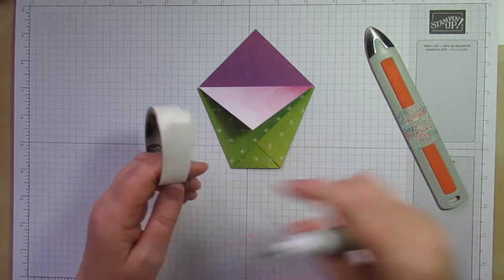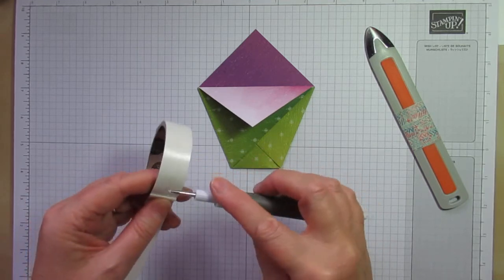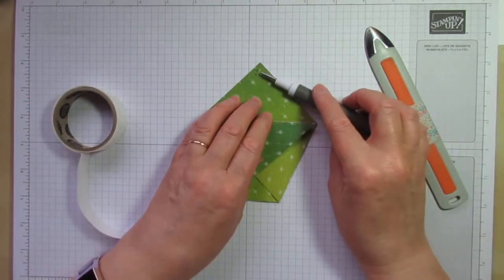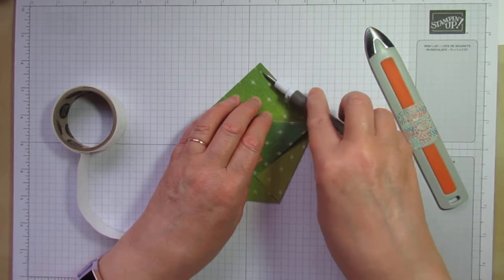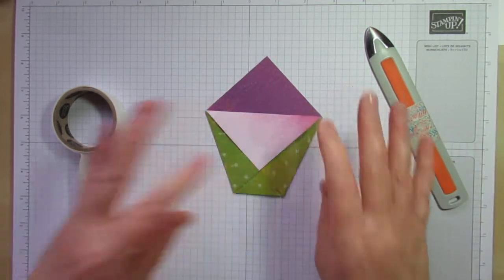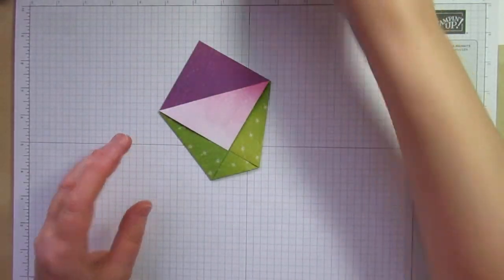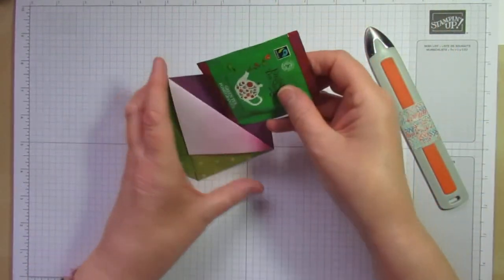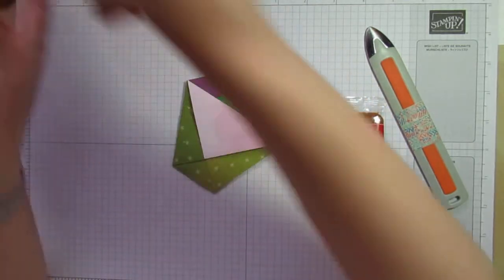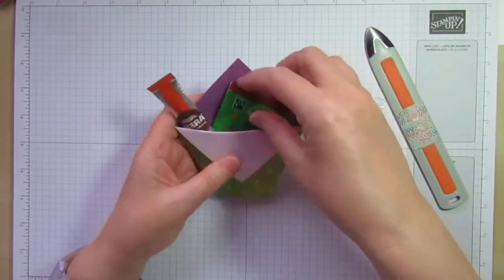And you've not got really very much overlap there and that's all you need to do so I'm just going to add a mini glue dot just to that point to hold it down okay like so there we are.